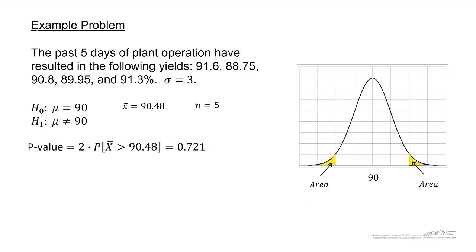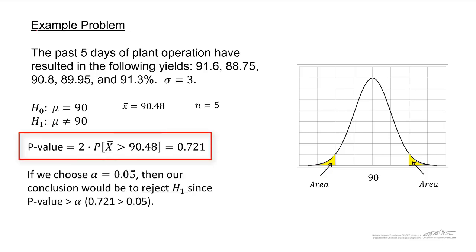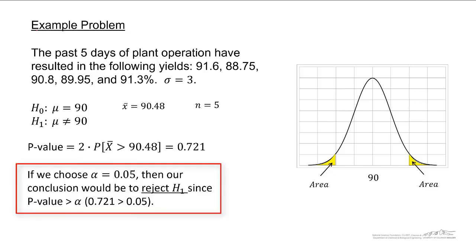For the second example, our two-tailed example, we got a p-value of 0.721. Obviously, this is much greater than the typical alpha values of 0.1, 0.05, 0.02, and 0.01. So we would essentially reject the alternate based upon any value of alpha.